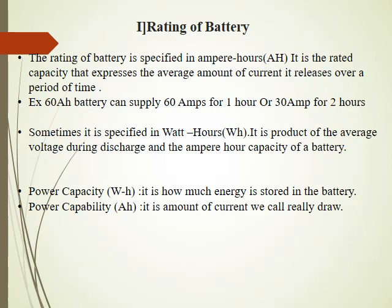In some batteries, the rating is also specified in terms of watt hours. As we know, watt is voltage multiplied by current. So the watt hour rating means it is the product of the average voltage across the terminals of the battery multiplied by the ampere hour capacity. The watt hour tells us how much energy is stored in the battery, while the ampere hour gives us the amount of current we can draw from that particular battery.